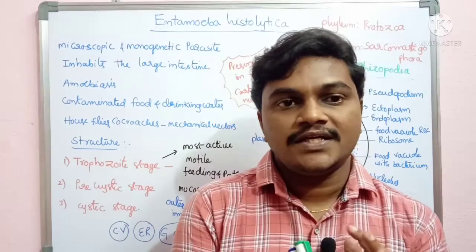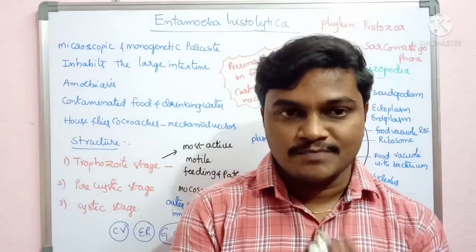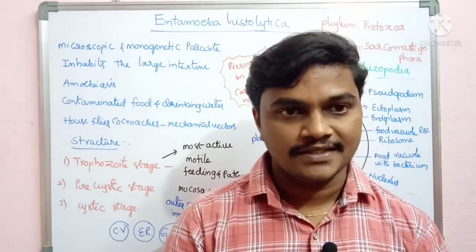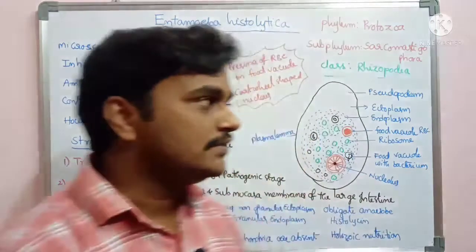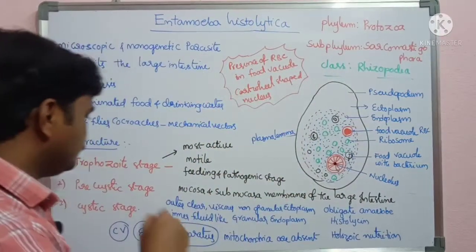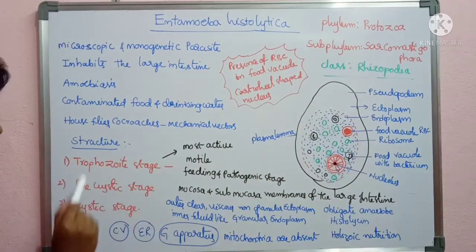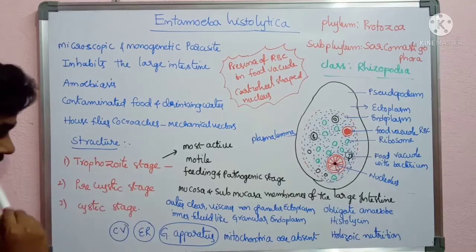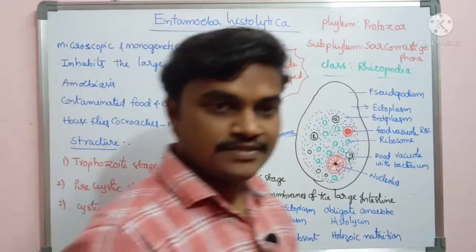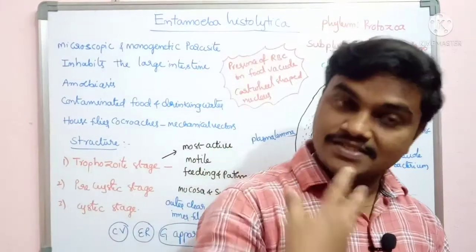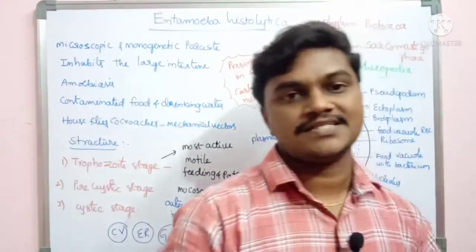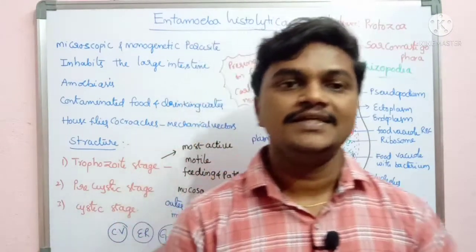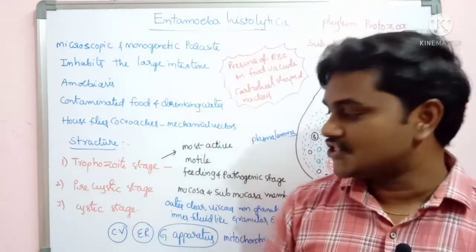In the life cycle of Entamoeba histolytica, there are three phases or three stages: the trophozoite stage, the pre-cystic stage, and the cystic stage. These three stages are present in the life cycle of Entamoeba histolytica.